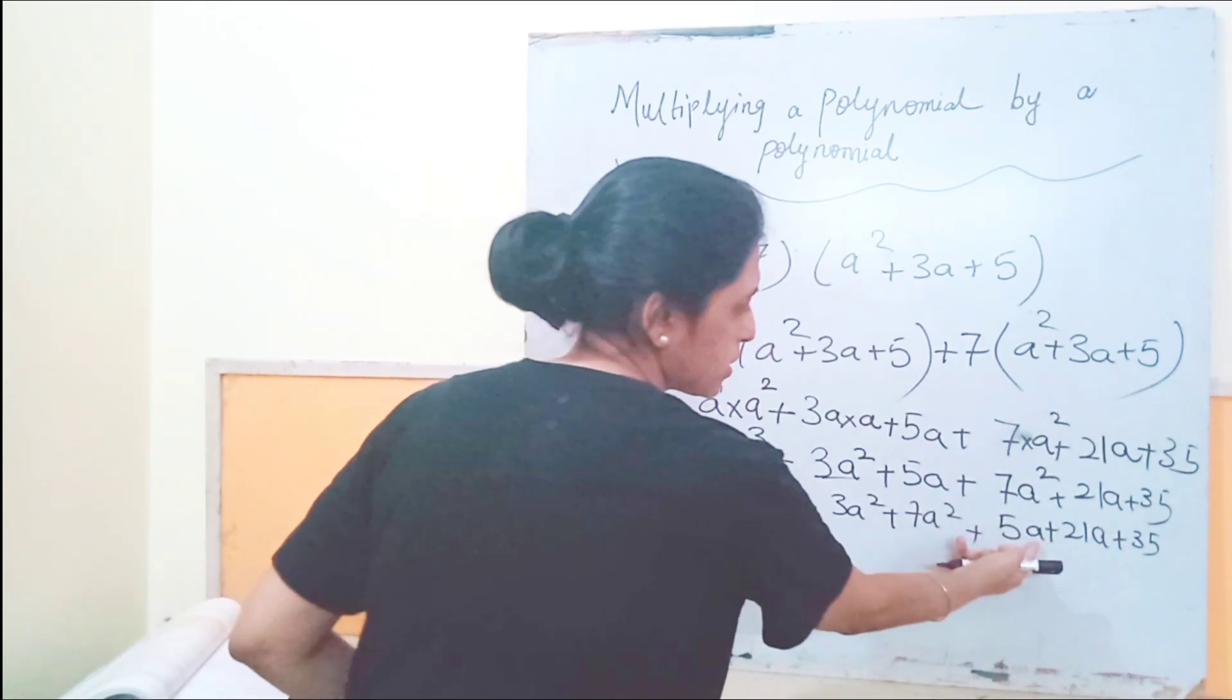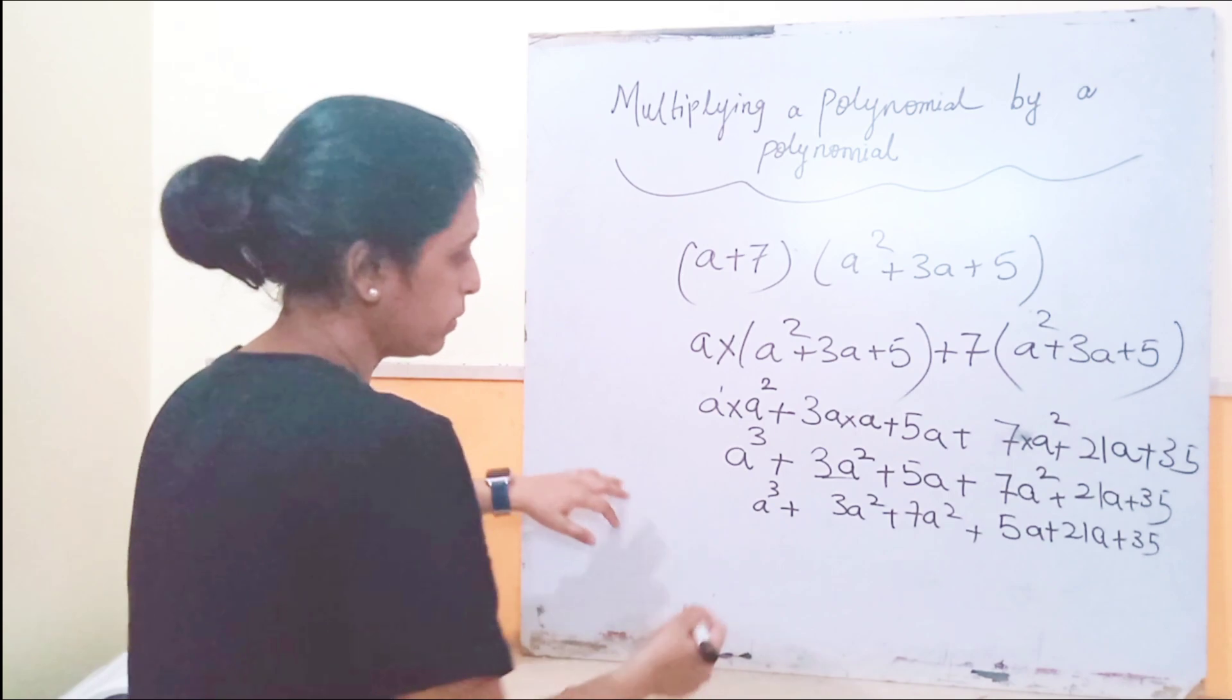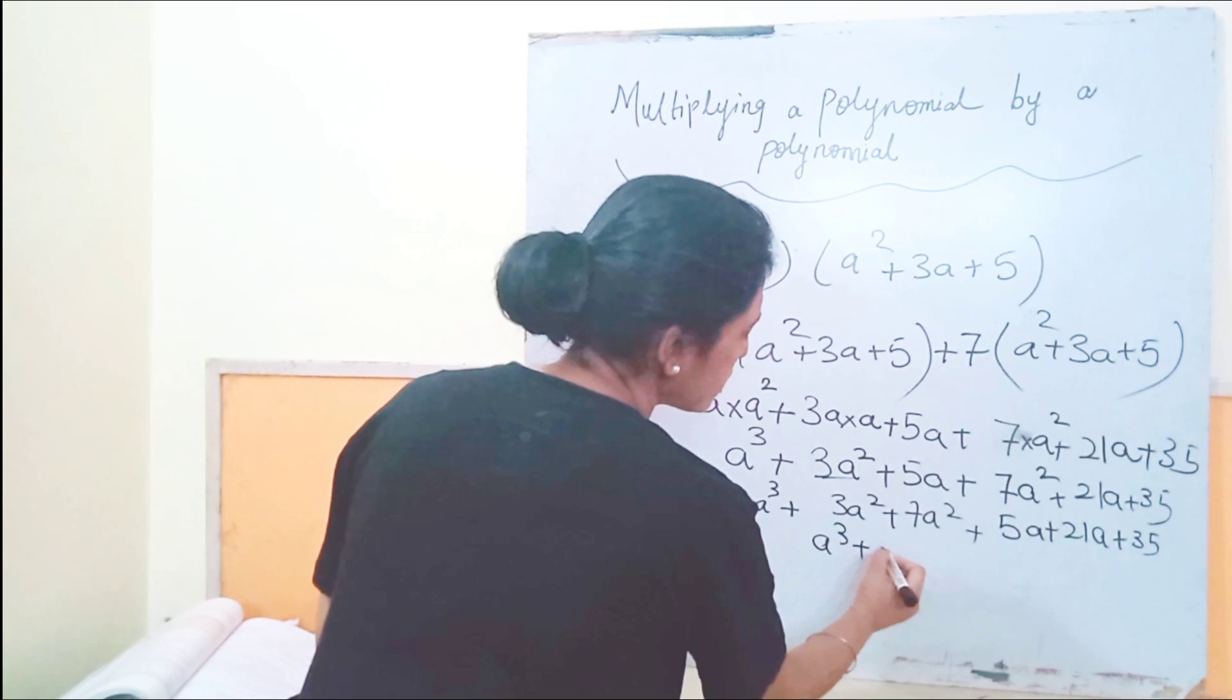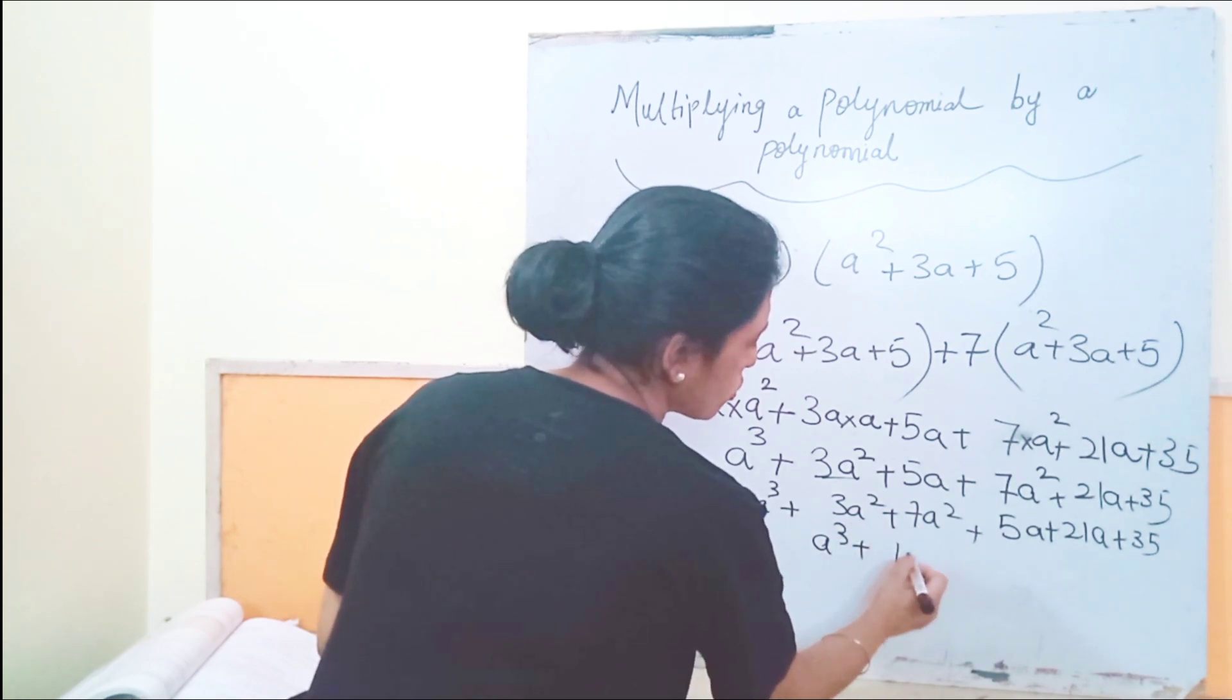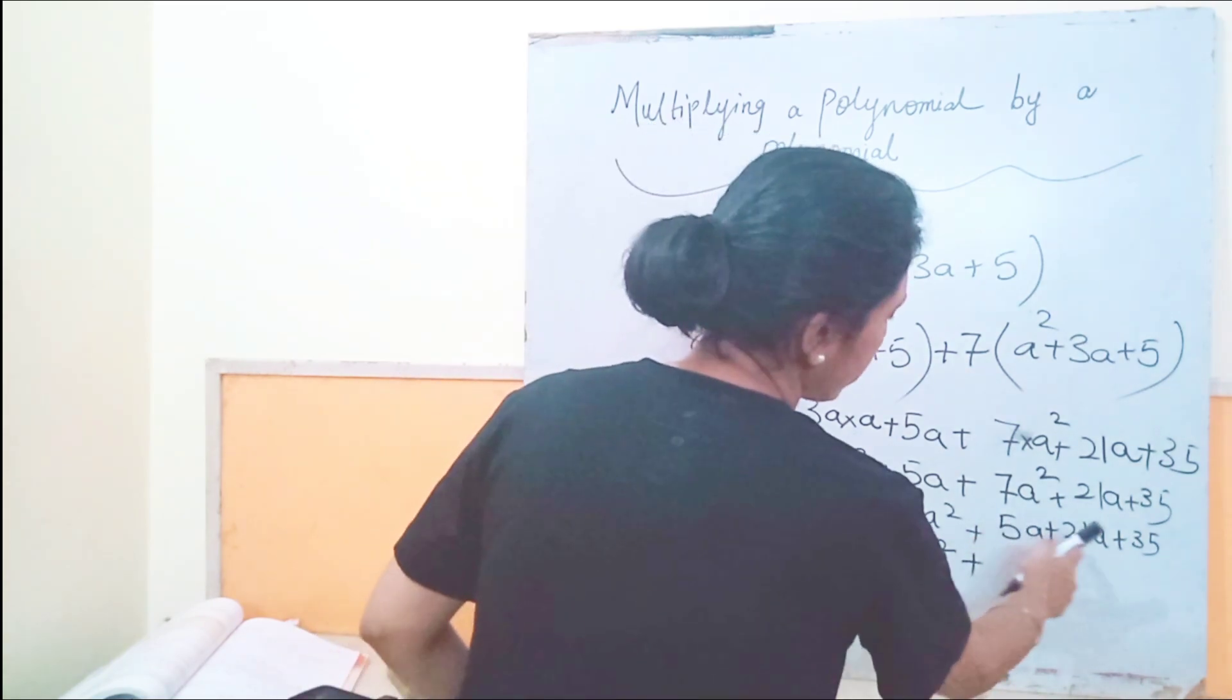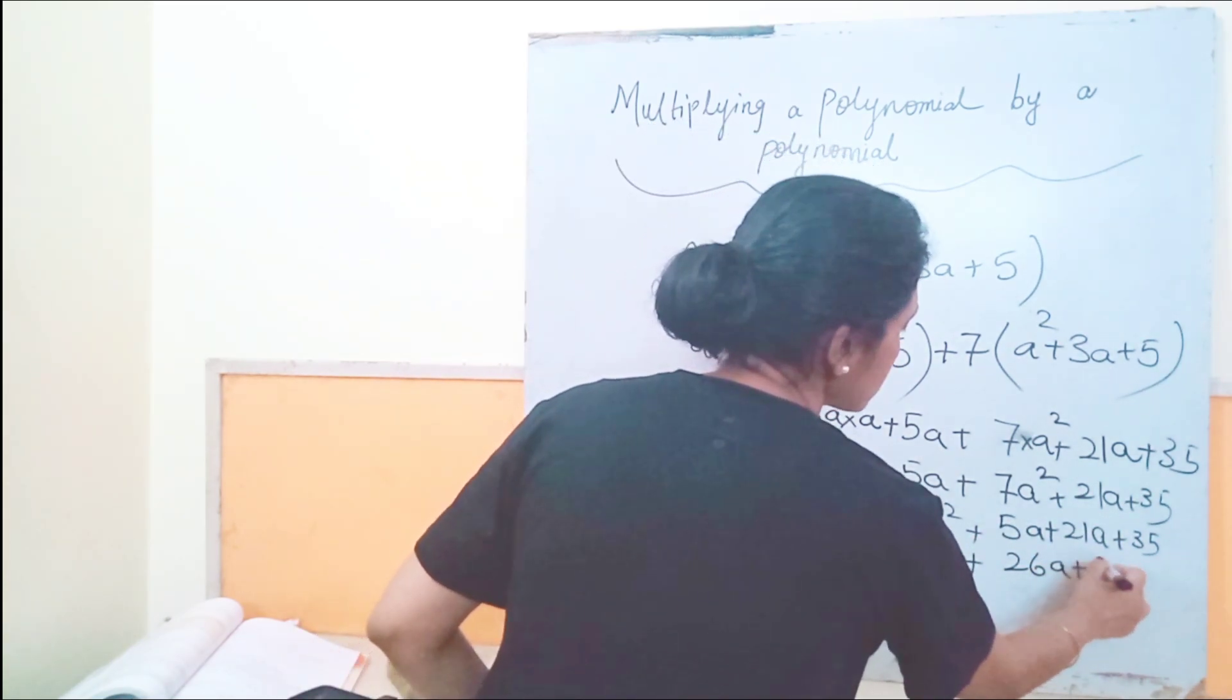plus 35, because they are like terms. It is also having the variable a and it is also having the variable a. Now a cubed plus 3 plus 7, so it is your 10a squared, plus 5 plus 21 is your 26a plus 35.